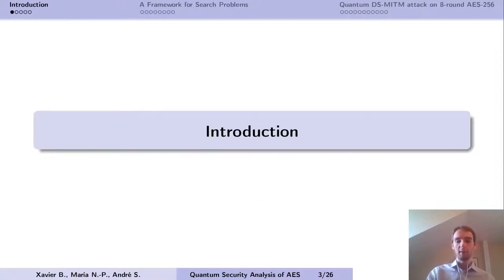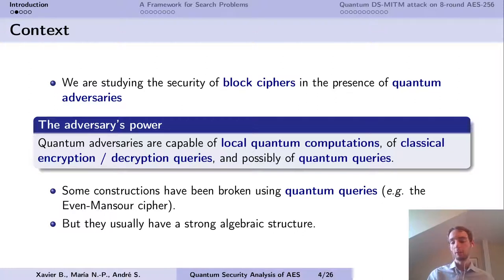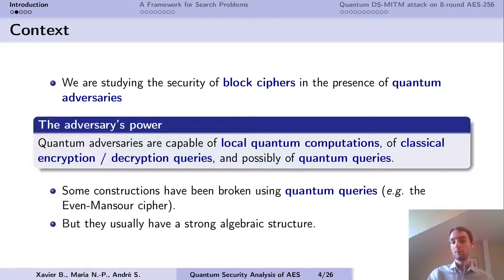In this paper we are studying the security of block ciphers in the presence of quantum adversaries. It is well known that some classical symmetric cryptographic constructions have been broken if you're able to use quantum queries — for example the Even-Mansour cipher — but these are specific examples with a very strong structure, which will not be the case here. A quantum adversary is capable of local quantum computations, still capable of doing classical encryption queries and potentially quantum queries. The fact that no such structure exists doesn't mean the adversary is completely hopeless; there may still be something better to do than simple exhaustive search.